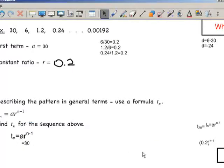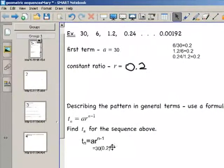And now I multiply by my constant ratio 0.2 to the n minus 1. And that is the general term for the specific sequence that we are using in this example. It is 30 times 0.2 to the n minus 1.